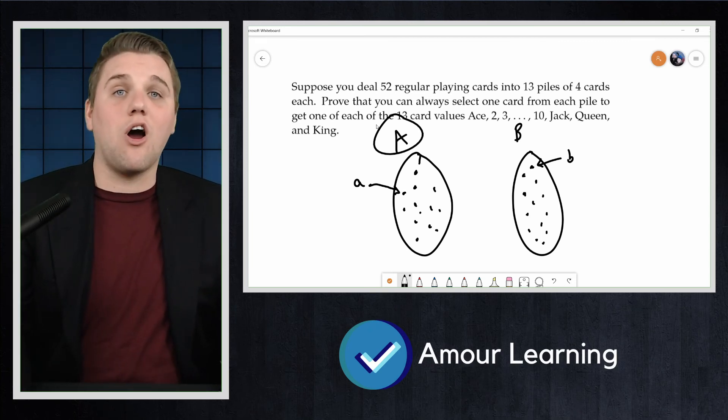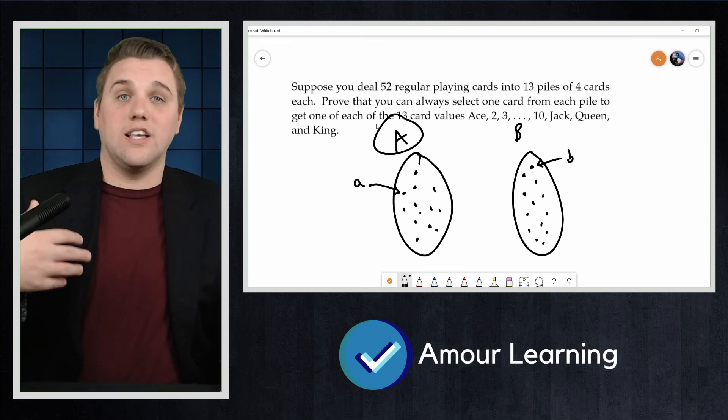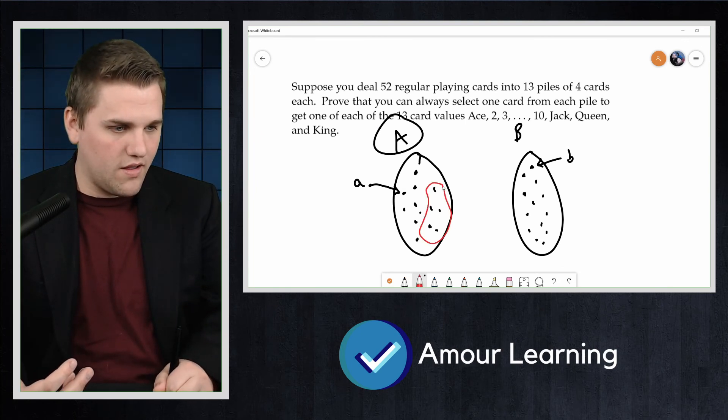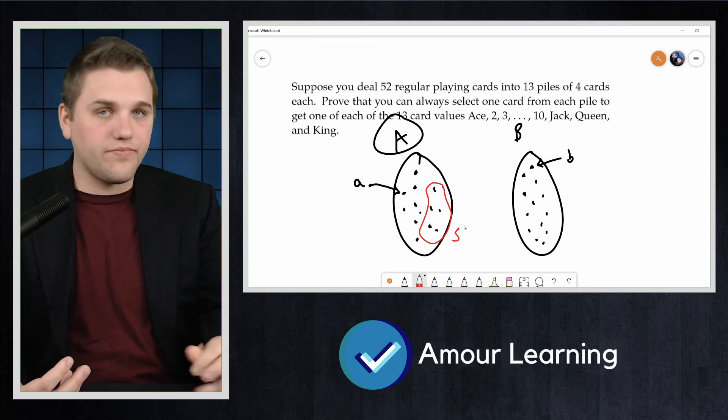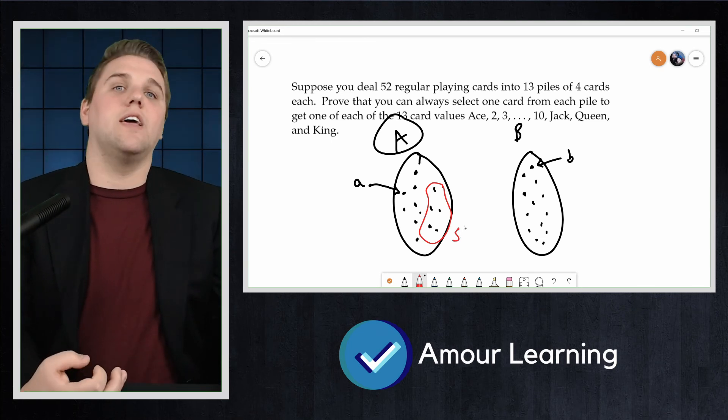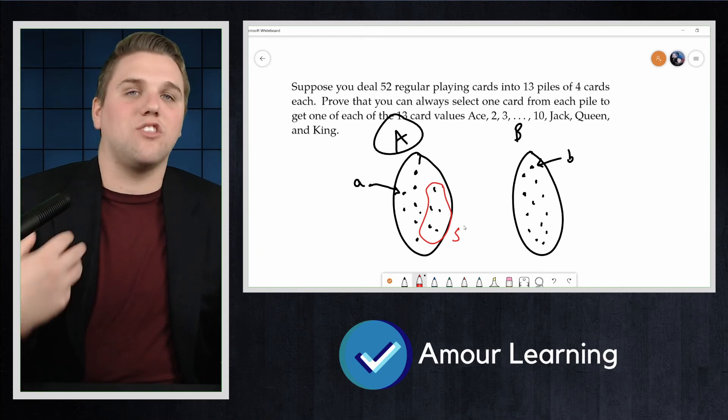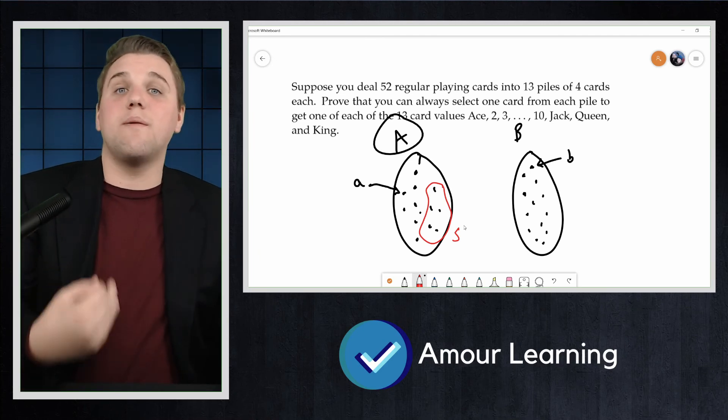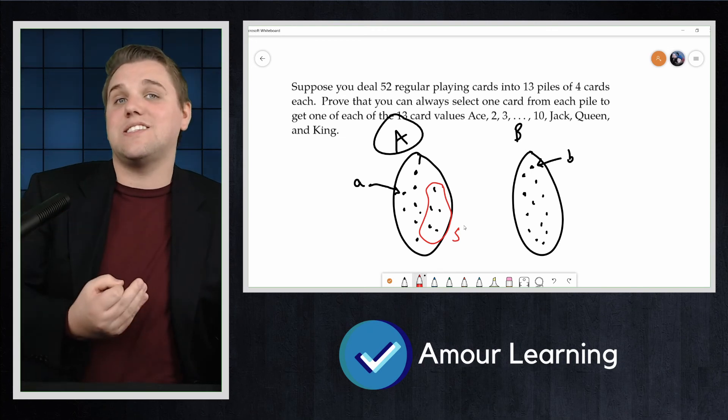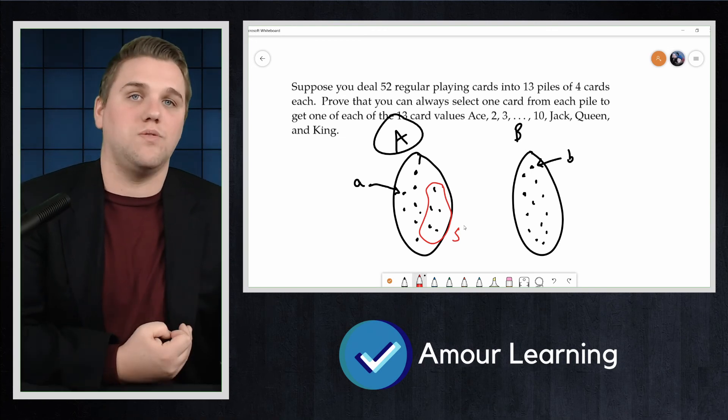Given any set of card values, or a set S in A, we must show that the neighborhood of this set is at least as large as this set. That is, the number of piles that contain those values is at least the number of different values.